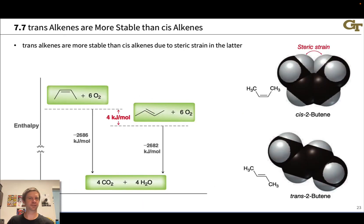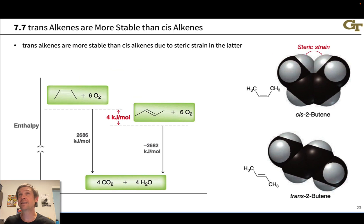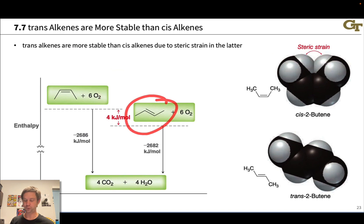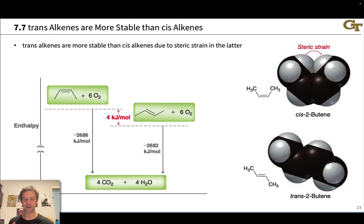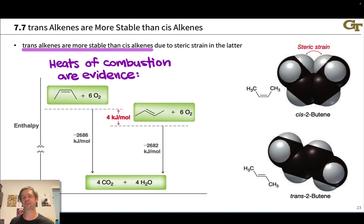When it comes to stability trends, the first and most important is the trans versus cis issue. The general observation is that for virtually every pair of diastereomeric alkenes, the trans isomer is more stable than the cis isomer. The simplest example is 2-butene: cis-2-butene and trans-2-butene, shown here with space-filling models and Lewis structures.